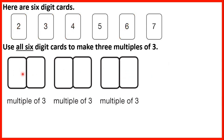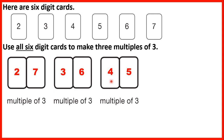But there is another possible solution as well. We could have 27 as a multiple of 3, because 9 times 3 is 27. We could have 36, and we could have 45. These are all multiples of 3, because when we divide them by 3 we don't get a remainder. And again, we could switch the digits around, so we could have 72, 63 and 54 as well.